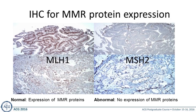Immunohistochemistry can also be used to look at the byproducts of mutations in the mismatch repair genes, examining the protein expression of these genes. On the left side of the figure, you can see expression of MLH1 present as brown in the nuclei, both in the tubulovillous adenoma and the tumor. On the right side, MSH2 is not expressed in either the tubulovillous adenoma or the tumor.